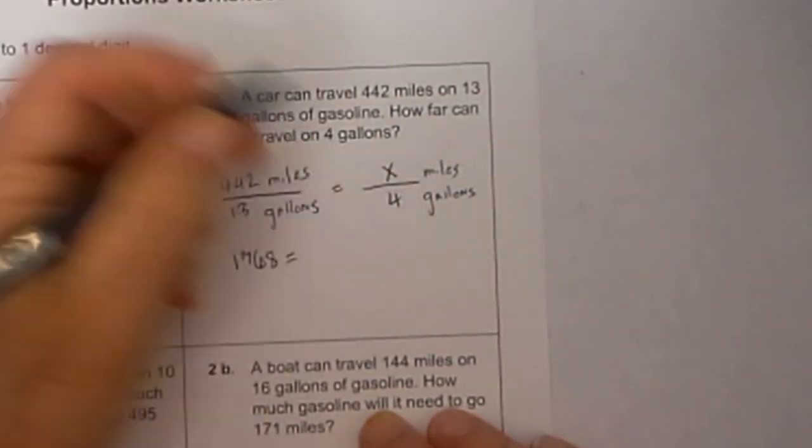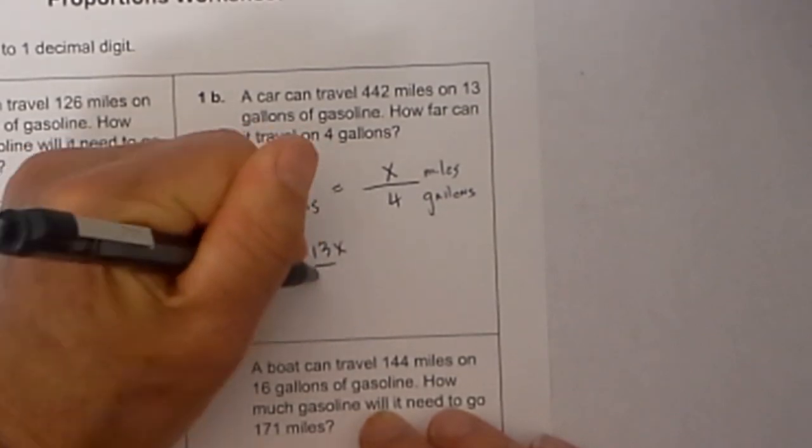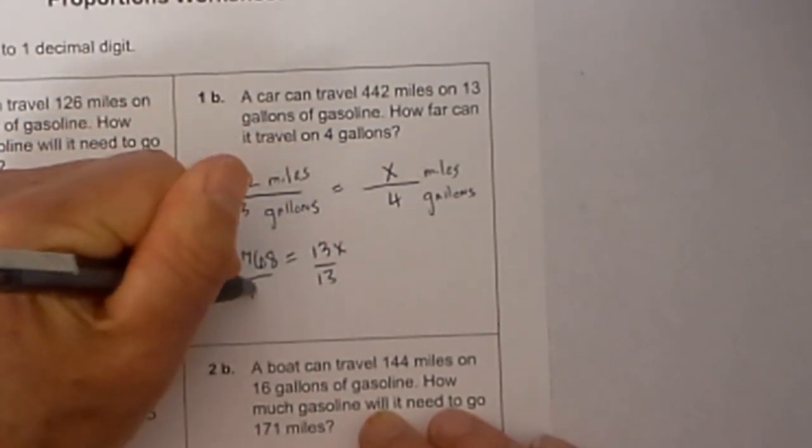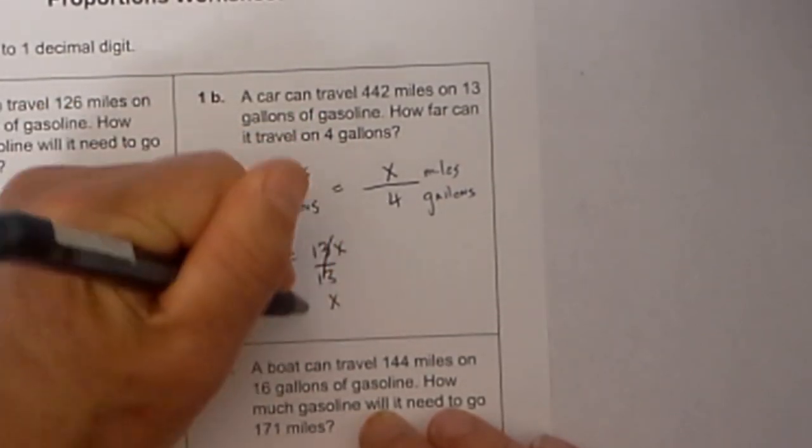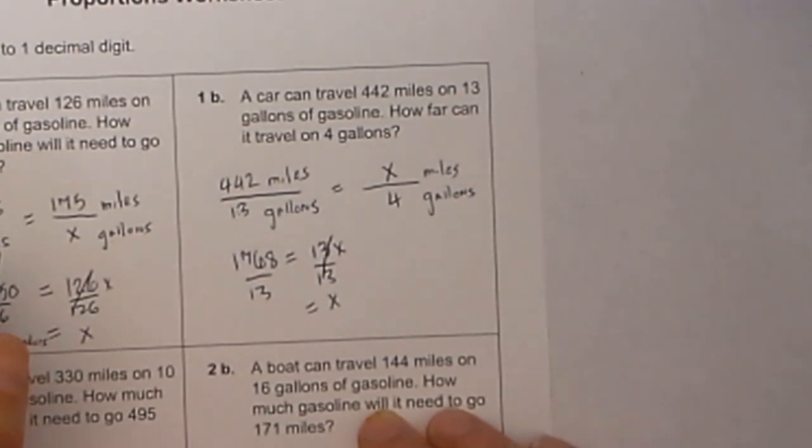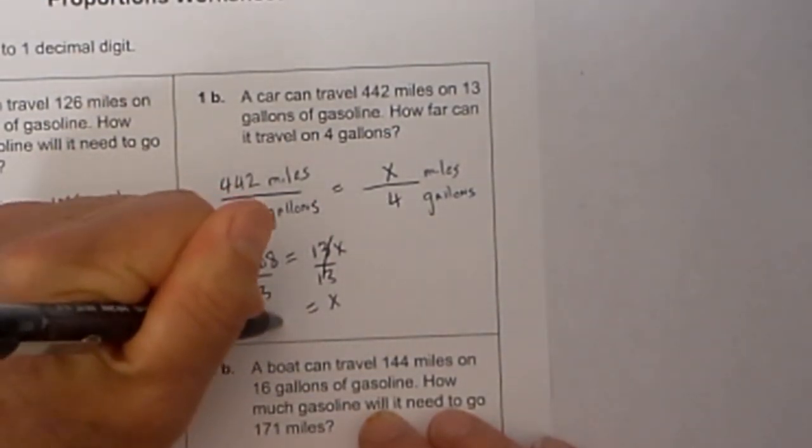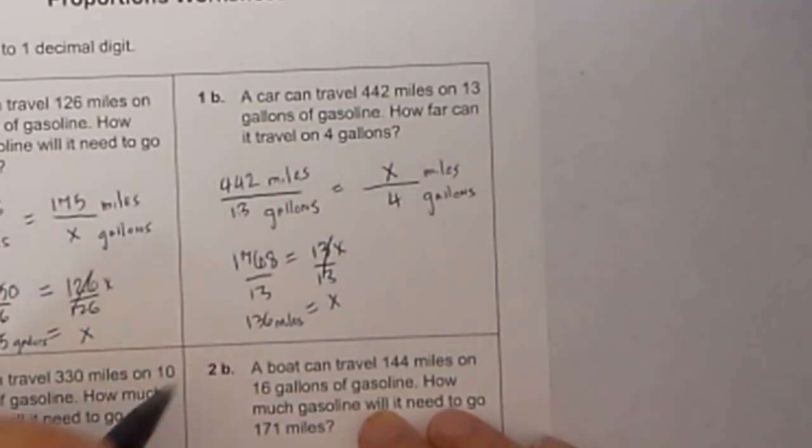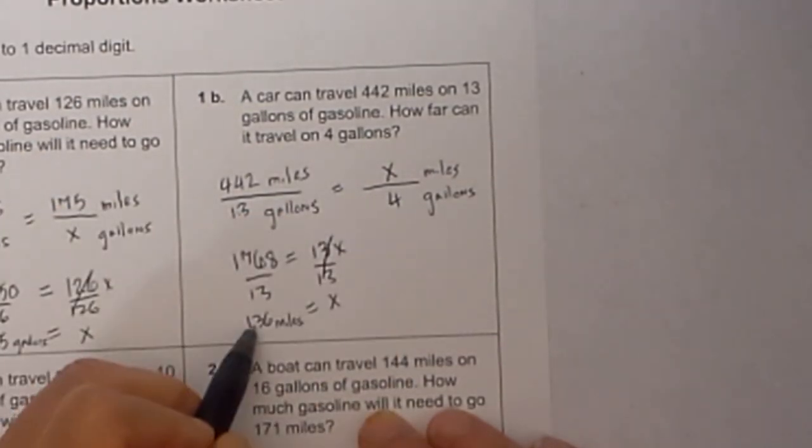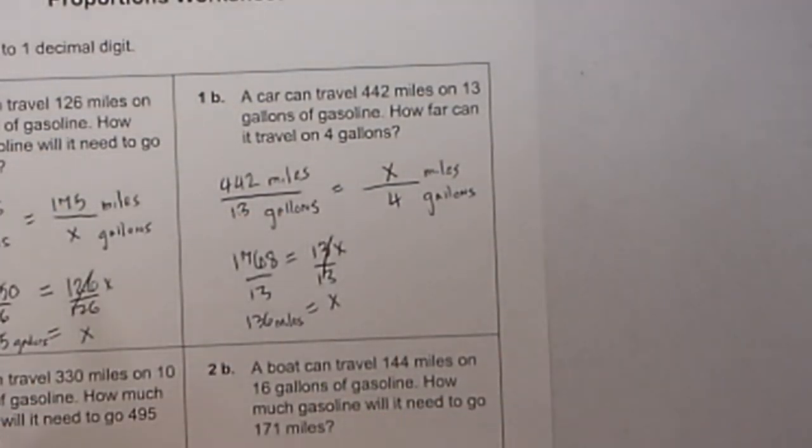13 times x is equal to 13x. Divide each side by 13 and x is equal to 1768 divided by 13, which is 136 miles. So it will travel on 4 gallons 136 miles.